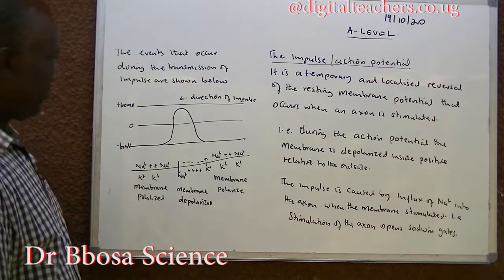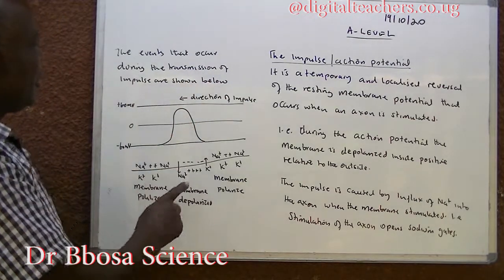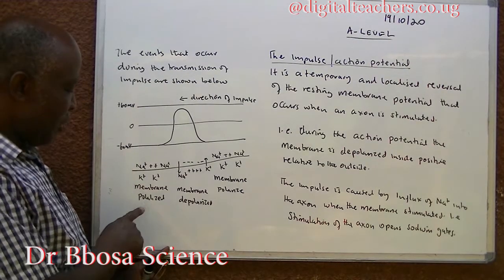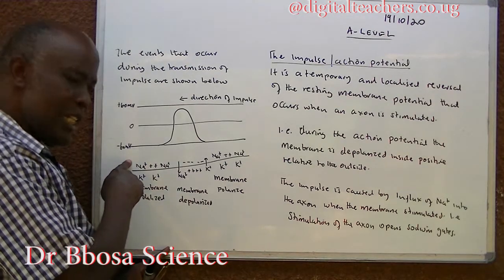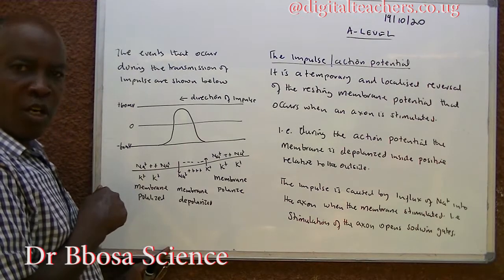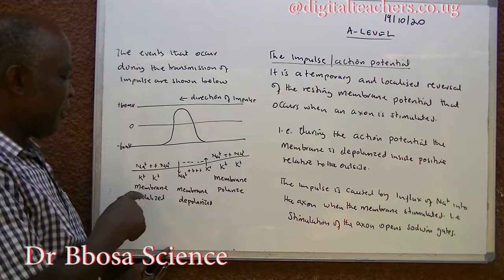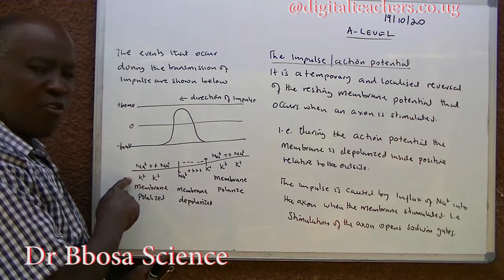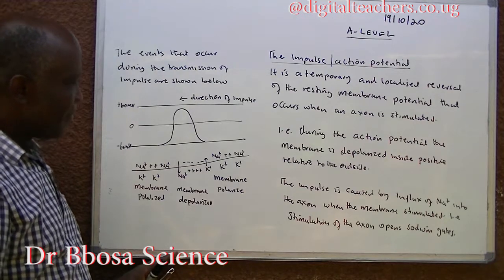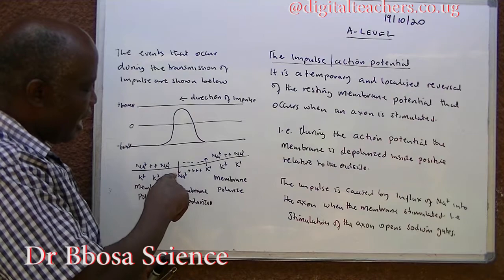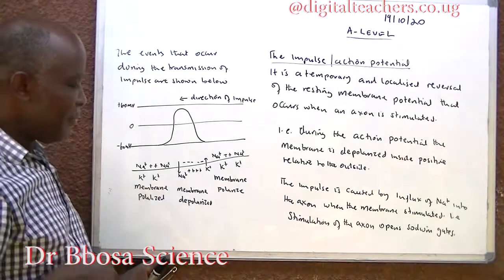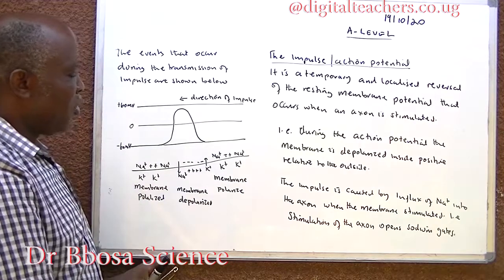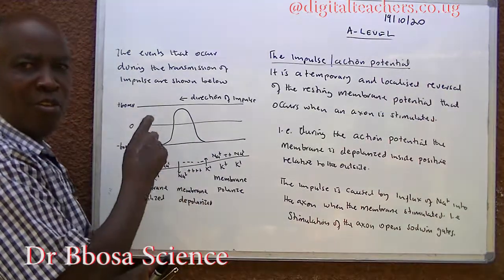The events that occur during transmission of impulses are as follows. Before an impulse, the membrane is polarized — positively charged outside relative to the inside. The positive charge outside is caused by the many sodium ions outside relative to few potassium ions inside. When the axon is stimulated, sodium gates open. Since there are more sodium ions outside than inside, they diffuse inside, causing the membrane to become more positive inside relative to outside.